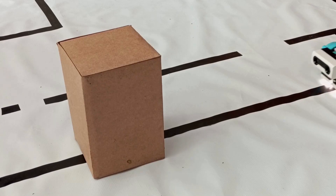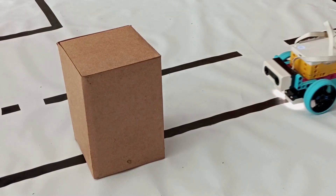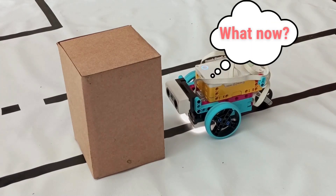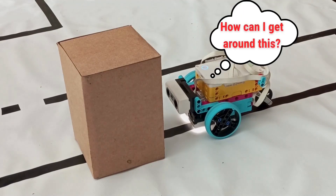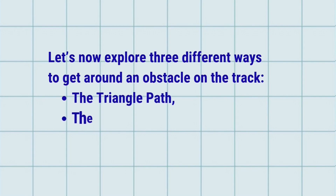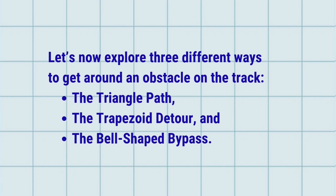Hello everyone. Welcome back to the Robotica Maker and Etcetera channel. In this video, I will show you three different strategies for helping a line-following robot avoid an obstacle on the track. Let's now explore three different ways to get around an obstacle: the triangle path, the trapezoid detour, and the bell-shaped bypass.